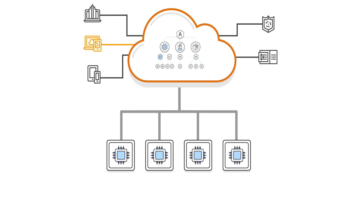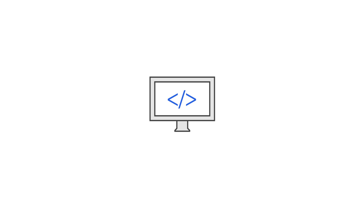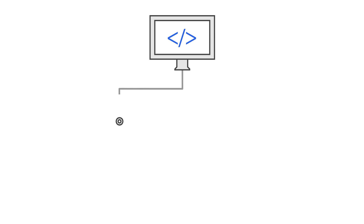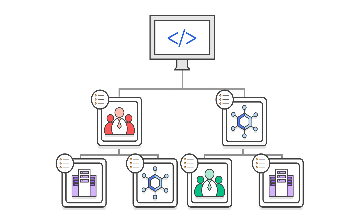For example, you can create a group of accounts that are used for production resources and then apply a policy to this group that limits which AWS service APIs those accounts can use. You can also use the Organizations APIs to help automate the creation of new AWS accounts. With a few simple API calls, you can create a new account programmatically and then apply the correct policies to the new account automatically.